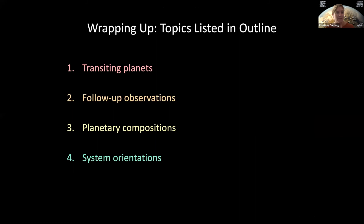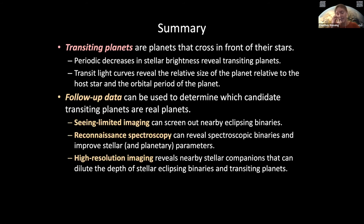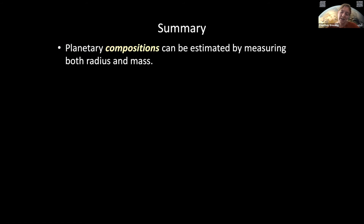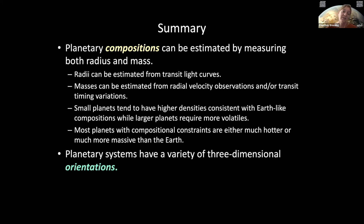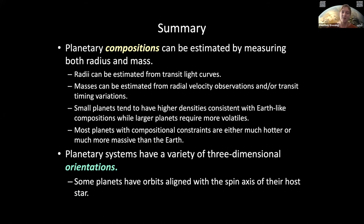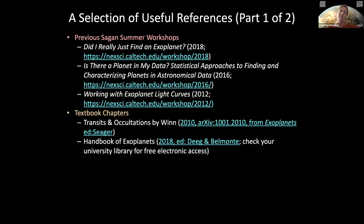To summarize, we covered four topics today: transiting planets, follow-up observations, planet compositions, and system orientations. We learned that transiting planets are the ones that cross their star, we find them by monitoring decreases in brightness, and follow-up data can be used to figure out which systems are real and which are false positives. We reviewed five different ways that the TESS follow-up observing program follows up these systems, and briefly discussed planet composition — while we measure a mass and a radius, we can use other information to infer the full planet composition, and transmission and emission spectroscopy can further constrain our model of the planet's atmosphere. Finally, we touched on using the Rossiter-McLaughlin effect to study system orientations, noting that some planets are nice and flat and coplanar, while others have very different orbits. If you want more information, I encourage you to check out the online talk and previous Sagan Summer Workshop slides.